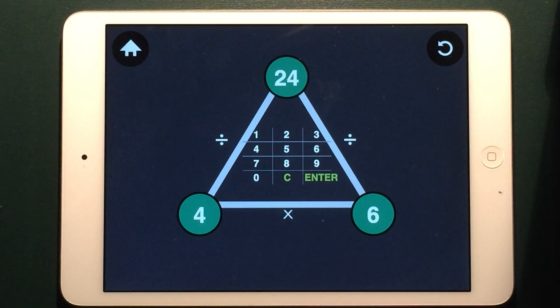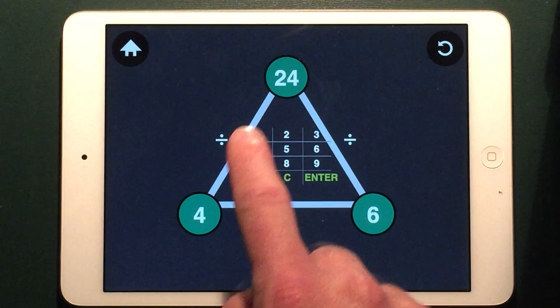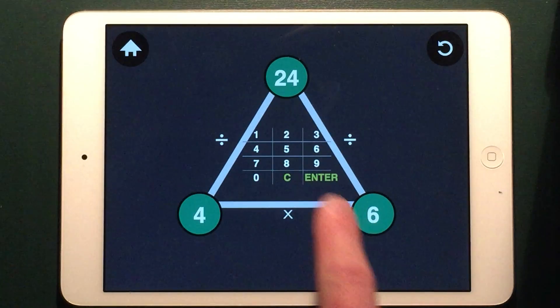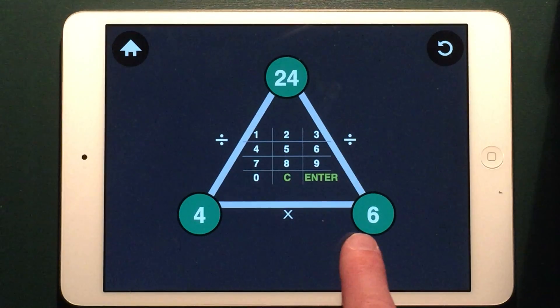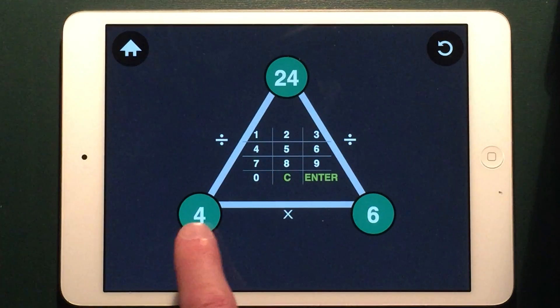What you want to point out to students here is the relationship between the numbers and the operations. 24 divided by 4 equals 6. 24 divided by 6 equals 4. 4 times 6 is 24, and 6 times 4 is 24.